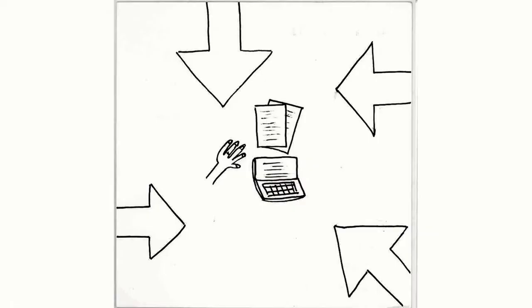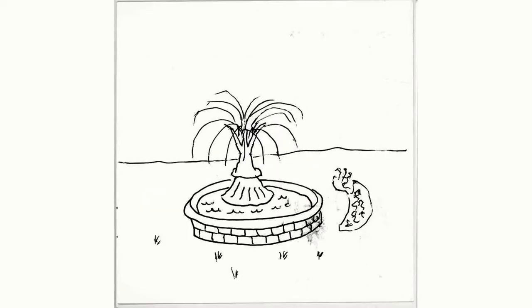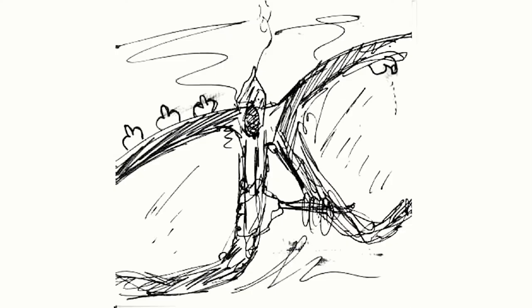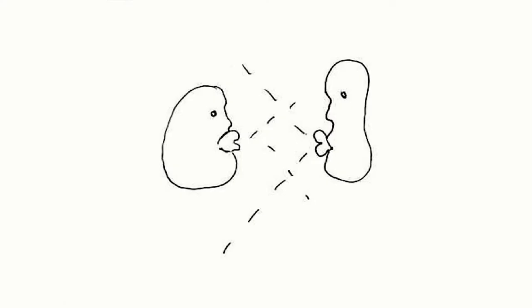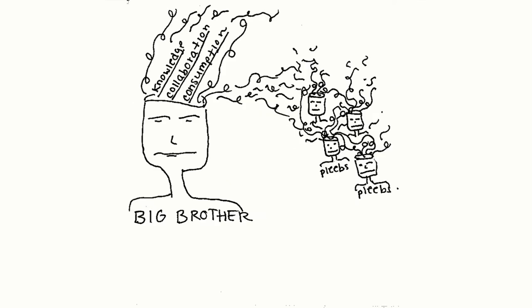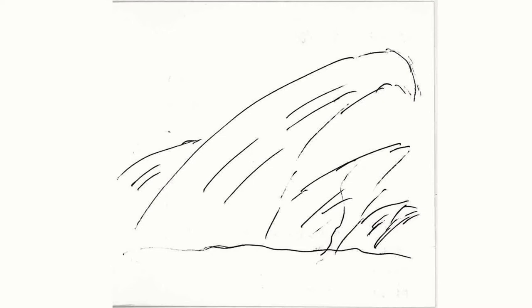The first interesting finding was that there are hundreds of different ways to draw information. If we were doing research on a concept like happiness, I think we might get 75% smiley faces. But with the concept of information, we have seen such a wide range of responses — from people drawing patterns to invoking nature, to geometrical shapes and symbols, to people and animals as well.